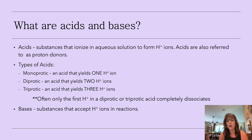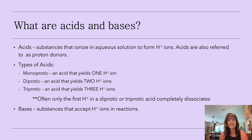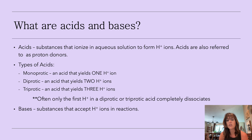We also call H+ protons because a hydrogen is just a proton and an electron. When you get rid of the electron, what do you have left? A proton. There are three different types of acids: monoprotic — they have one hydrogen; diprotic — they have two; and triprotic acids have three hydrogen ions. Even if you're a diprotic or triprotic acid, typically it's the first hydrogen ion that wants to dissociate. The second and third don't always come off.